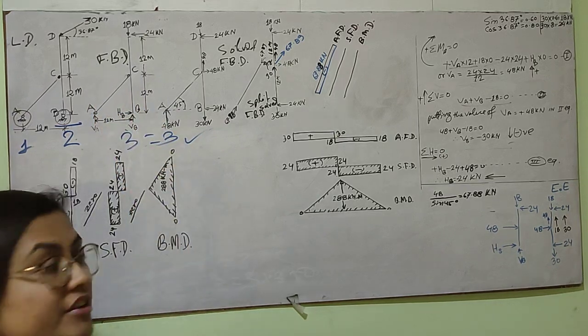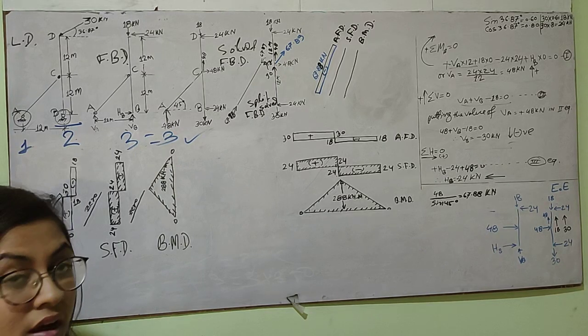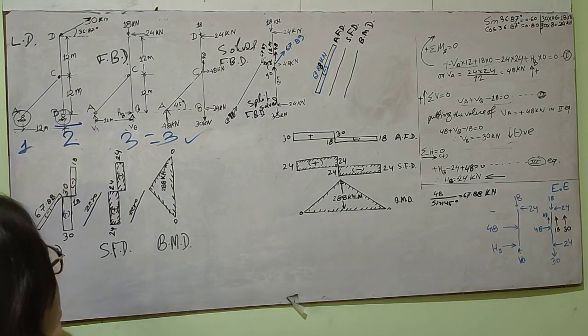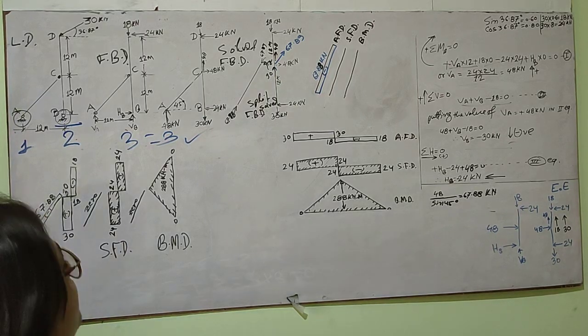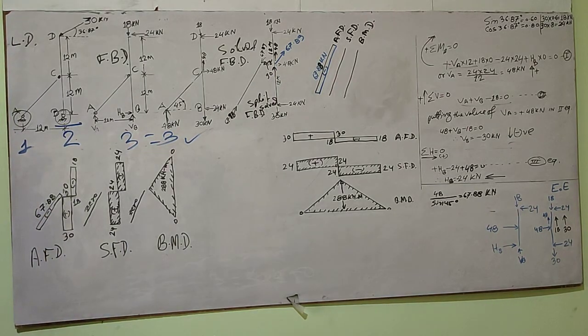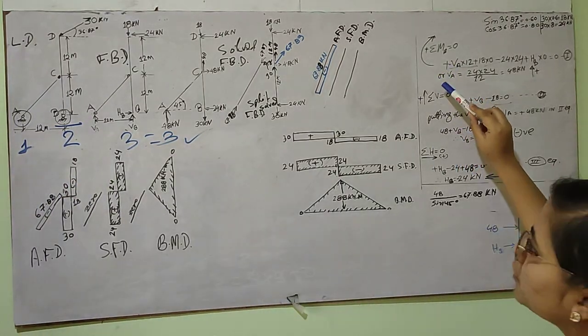I'm assuming that the reaction components VA and VB are acting vertically upward, and the reaction component HB is acting towards the right. Now I need to take the moment about point A or B equals zero. For simplicity, I have taken the moment about point B equals zero.